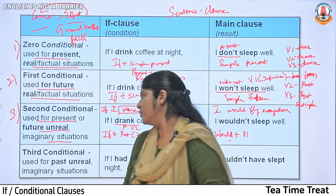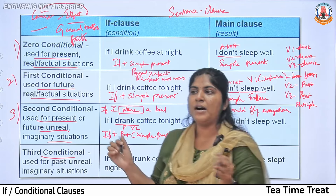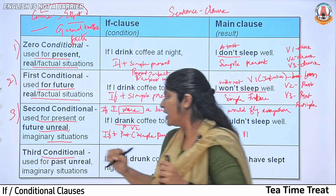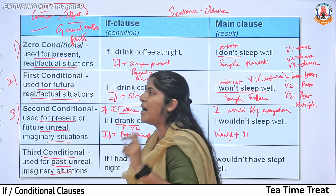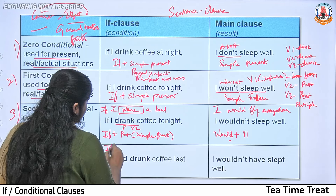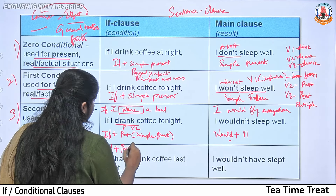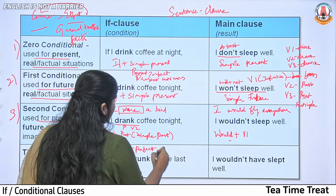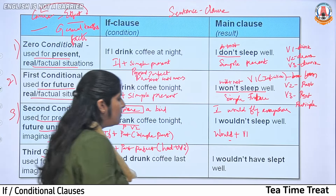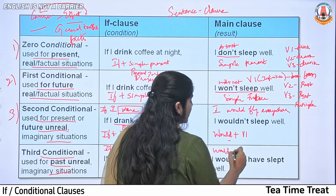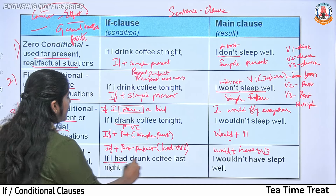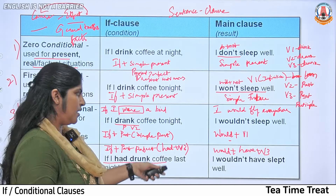Now let's look at the third conditional. The third conditional is used for past unreal or imaginary situations. The structure is: if + past perfect (had + V3), would + have + V3 in the main clause. For example: 'If I had drunk coffee last night, I wouldn't have slept well.'